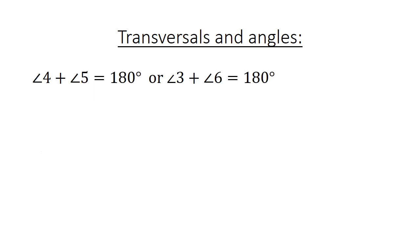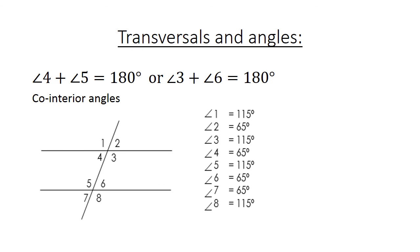Angle 4 plus angle 5 equals 180 degrees, or angle 3 plus angle 6 equals 180 degrees. We call this co-interior angles. We have angle 4 plus 5 or we have 3 plus 6 equals 180 degrees.